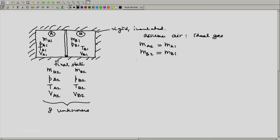So we will have PA2 VA2 is MA2 R TA2. And in a similar fashion we are given PB2 VB2 equals MB2 R TB2. Two more equations.